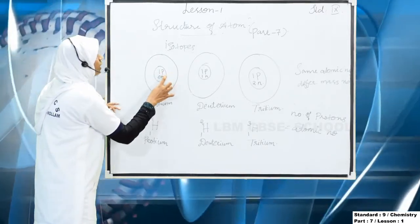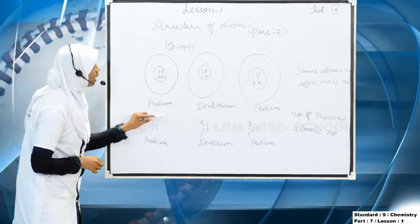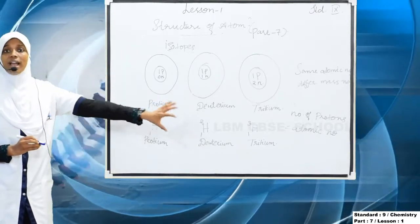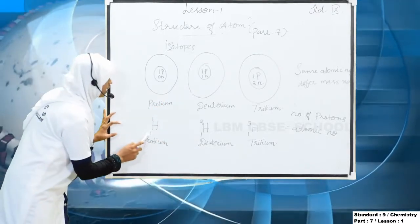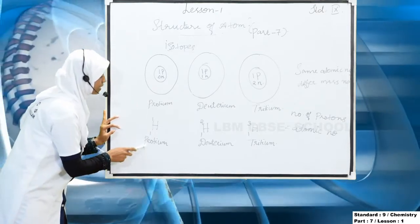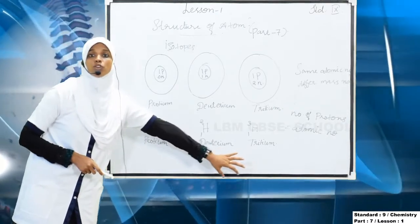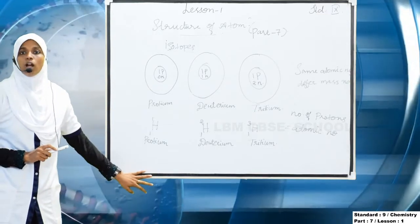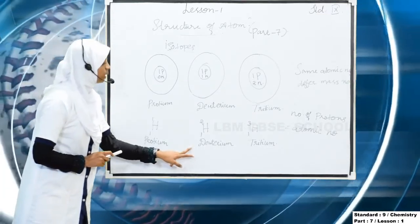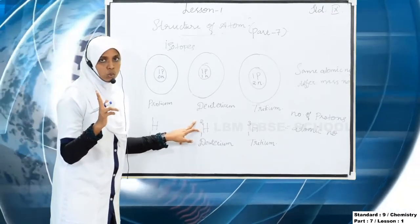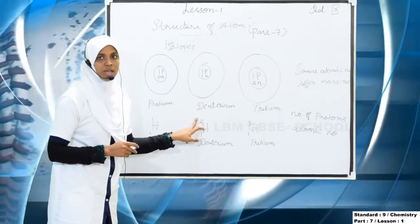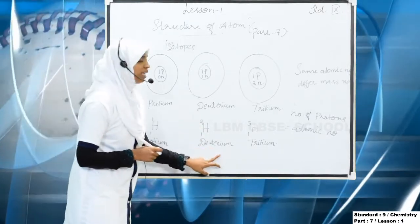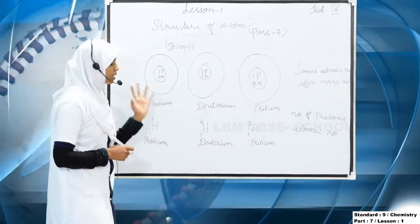In the first structure: one proton and zero neutrons — atomic number one, mass number one. That is called protium. The second one has atomic number one and mass number two — that is deuterium, another isotope of hydrogen.